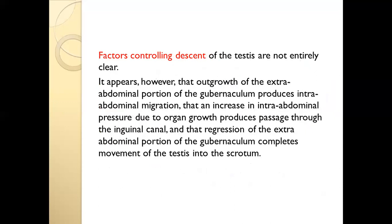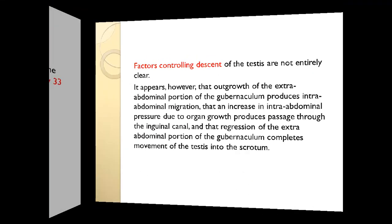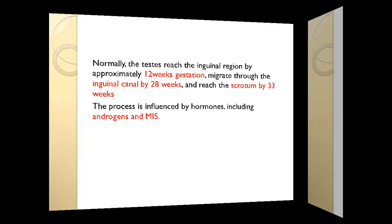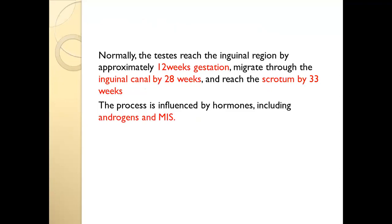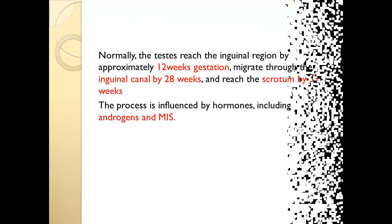Factors controlling descent include development of the extra-abdominal portion of the gubernaculum, increased intra-abdominal pressure from organ growth, and passage of the testis through the inguinal canal. Normally, the testis reaches the inguinal region by 12 weeks, migrates through the inguinal canal by 28 weeks, and reaches the scrotum by 33 weeks — the 8th month. This process is influenced by androgens and Müllerian inhibitory substance. Low androgen levels result in undescended testis — cryptorchidism.